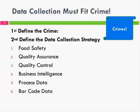So once I know the crime, I want to figure out what kind of data I need to collect. The following six points are that kind of listing of that kind of data, that includes food safety, quality assurance, quality control, business intelligence, process data, and info data. There's a lot of information on a barcode.